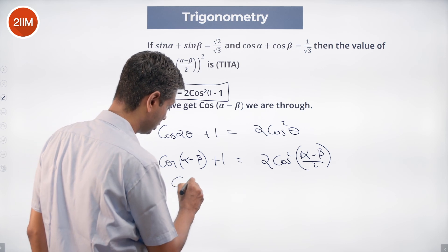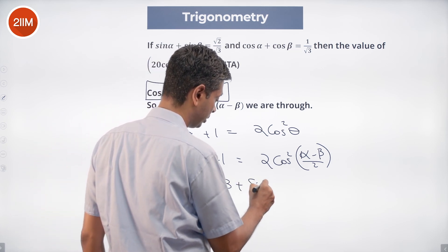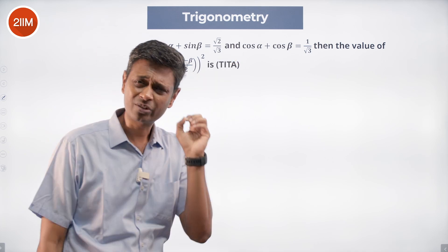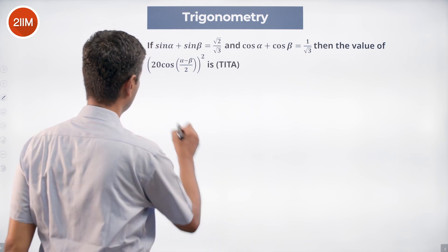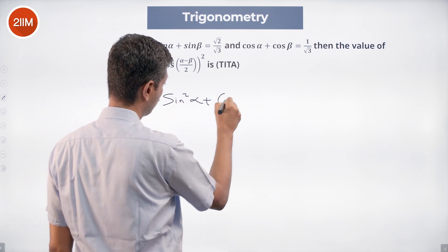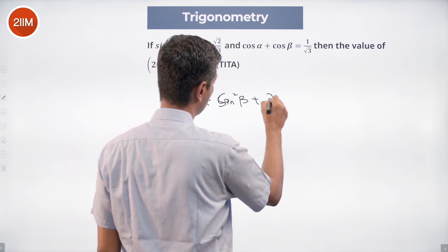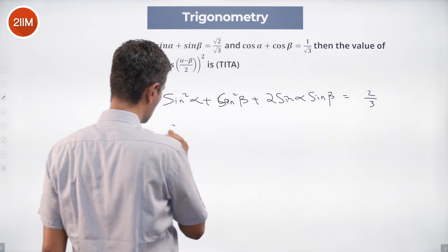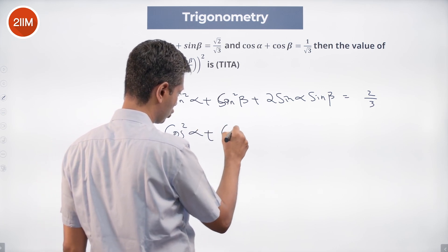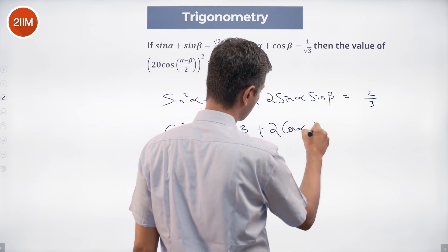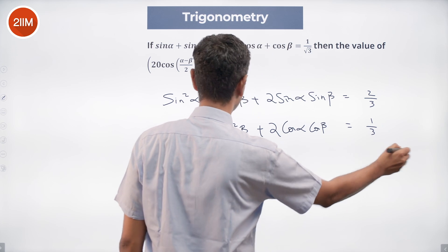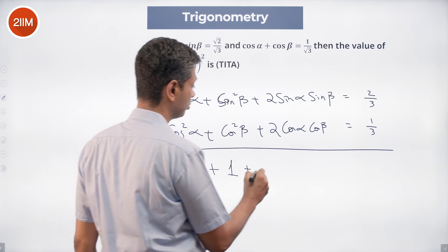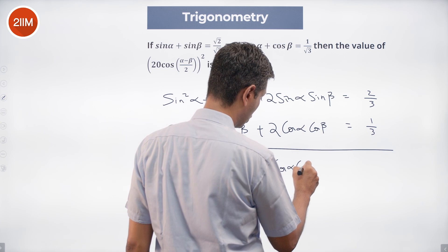cos(α-β) = cosα·cosβ + sinα·sinβ. I can square sinα + sinβ and cosα + cosβ, and I know that sin²α + cos²α = 1. So: (sinα + sinβ)² = sin²α + sin²β + 2sinα·sinβ = 2/3. And (cosα + cosβ)² = cos²α + cos²β + 2cosα·cosβ = 1 + 2cosα·cosβ.